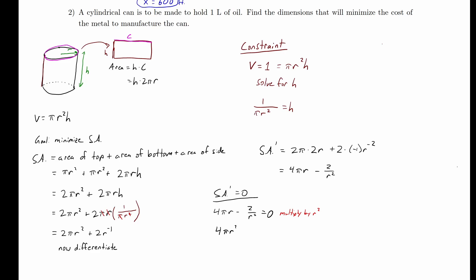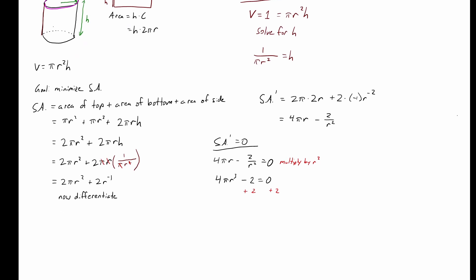Solving: add 2 to both sides, divide by 4 pi, then take the cube root. We get r equals the cube root of 1 over 2 pi, which is approximately 0.5419 decimeters. We also check where the derivative is undefined. Since we have a fraction, the derivative is undefined when r squared equals 0, i.e., r equals 0. But r equals 0 means we have no can, so that's not a real solution. With only one legitimate critical point, that must be the dimension minimizing the can.